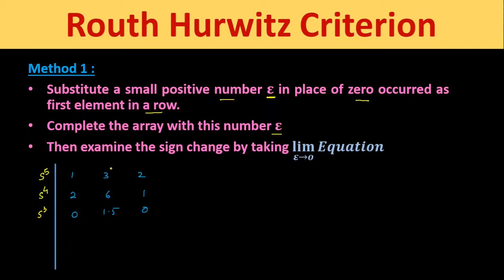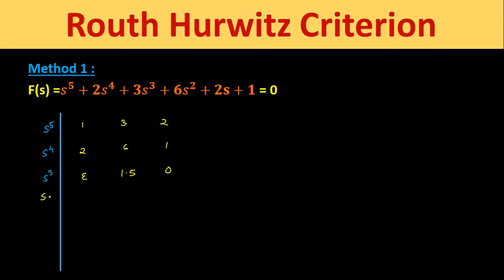In the s³ row, we replace the zero with epsilon. Now constructing the s² row: the first element is (ε×3 − 1.5×2) / ε = (6ε − 3) / ε, and the second element is (ε×1 − 0) / ε = 1.